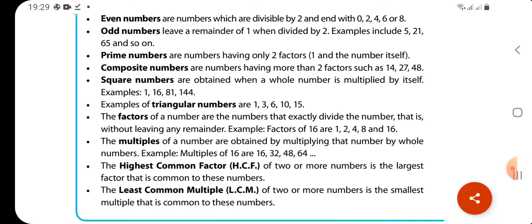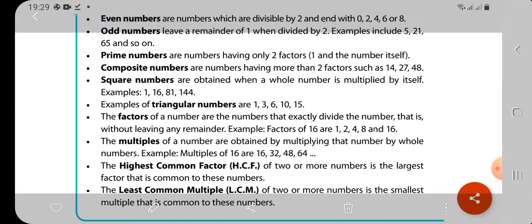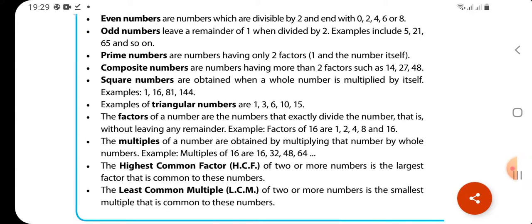Square numbers are obtained when a whole number is multiplied by itself. Examples: 1, 16, 81, 144. Triangular numbers are numbers 1, 3, 6, 10, 15.